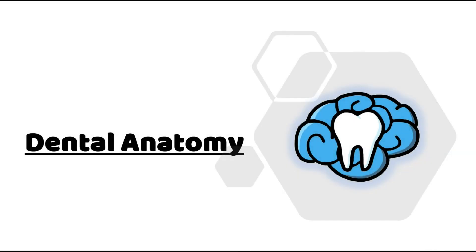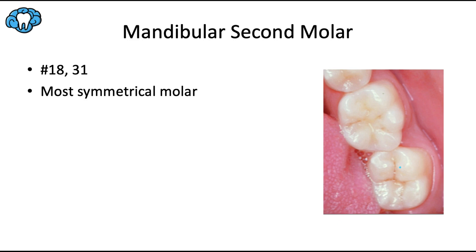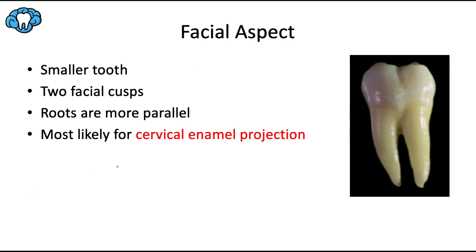Hey everyone, Dr. Ryan here. Welcome back to our dental anatomy series. This video is about the mandibular second molar. Here we have a picture of the permanent mandibular second molar as well as its neighboring first molar so you can compare the two. Using the universal tooth numbering system, this mandibular second molar includes tooth number 18 and number 31. One fun fact: this is the most symmetrical of all the molars in the mouth.